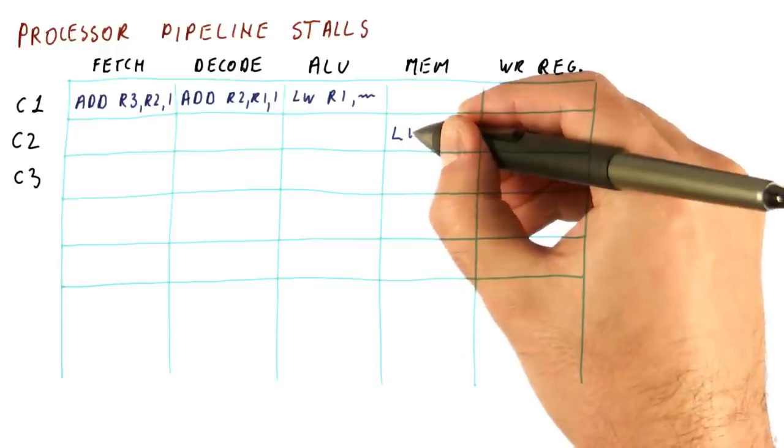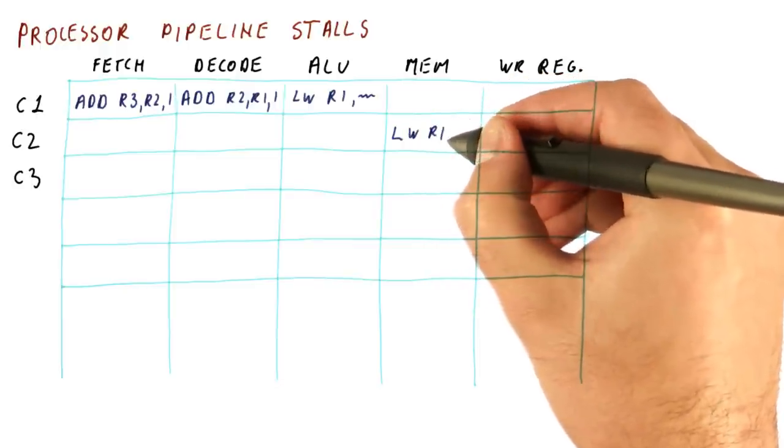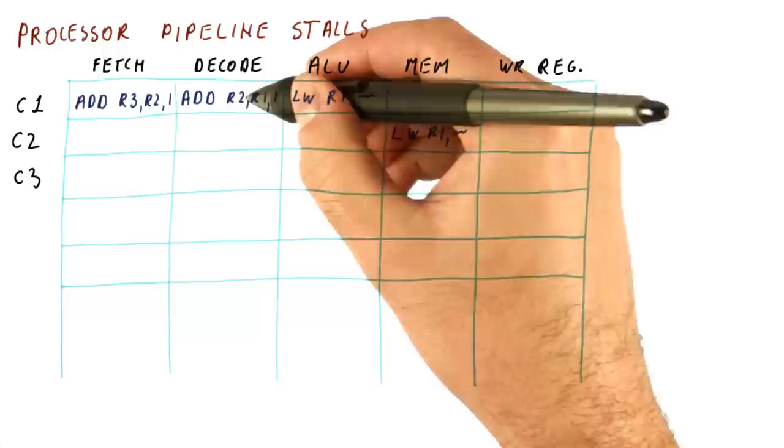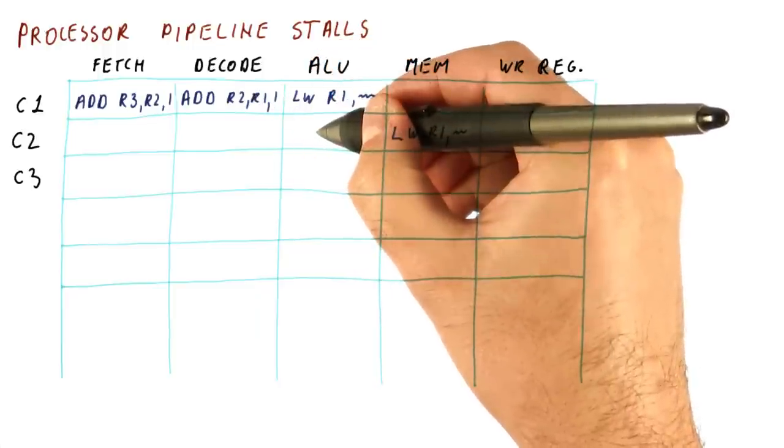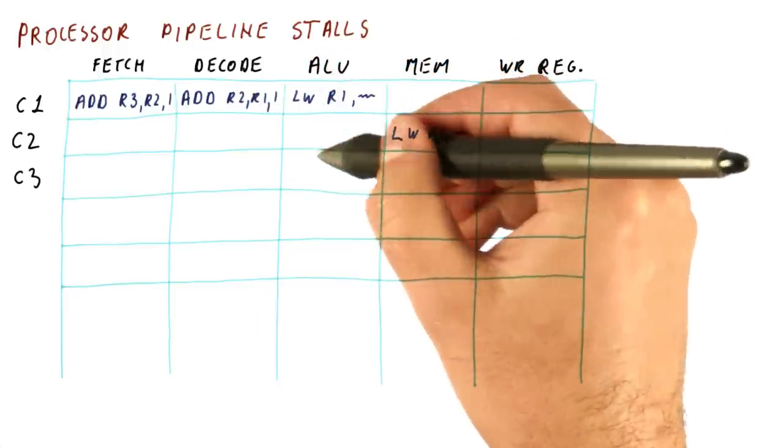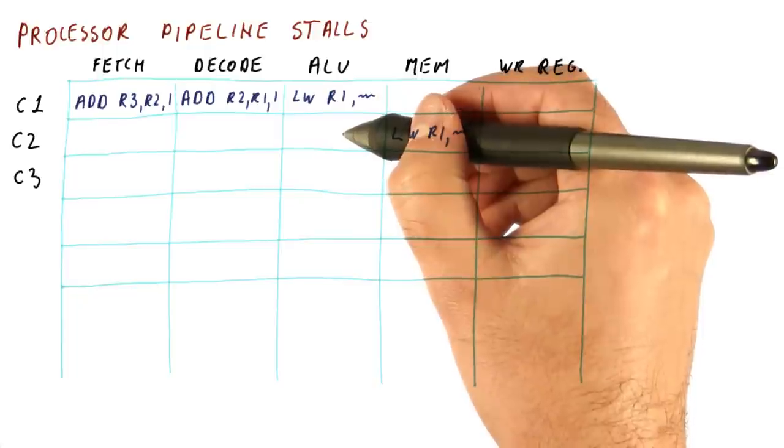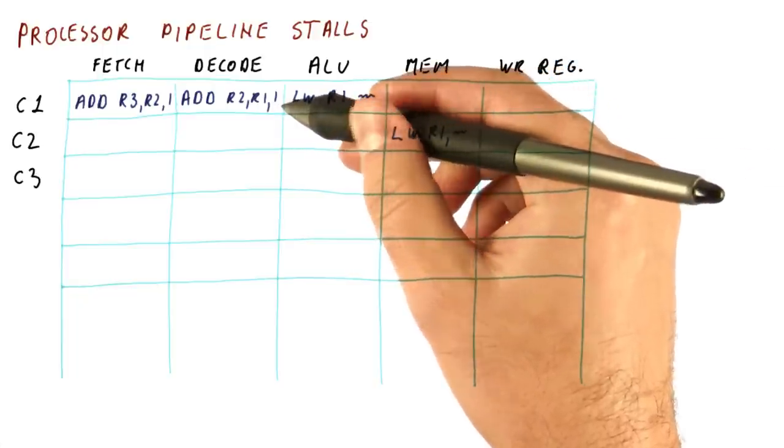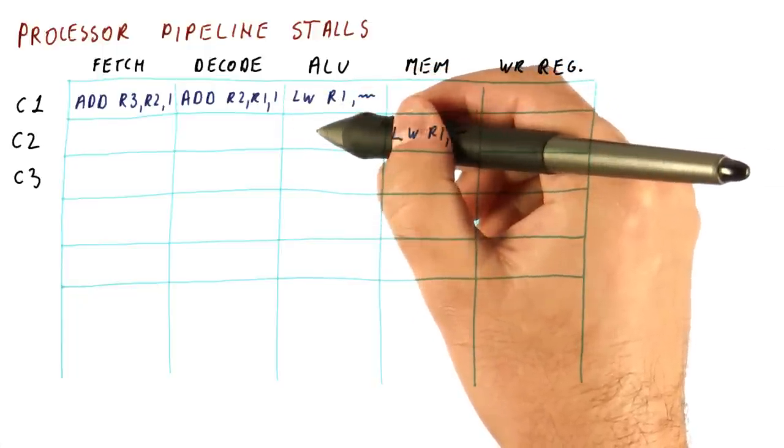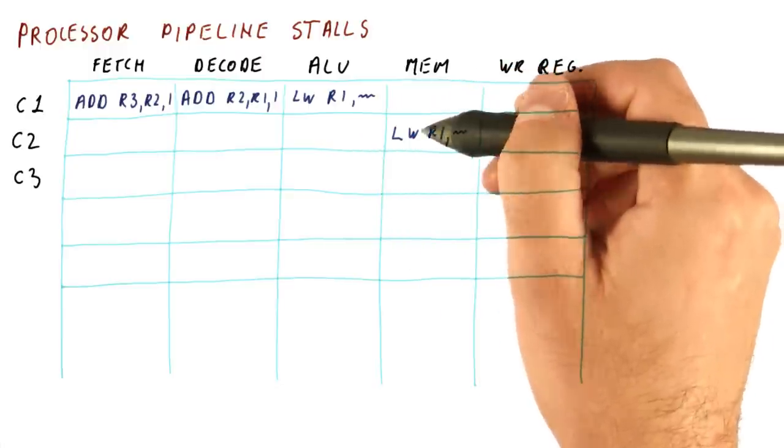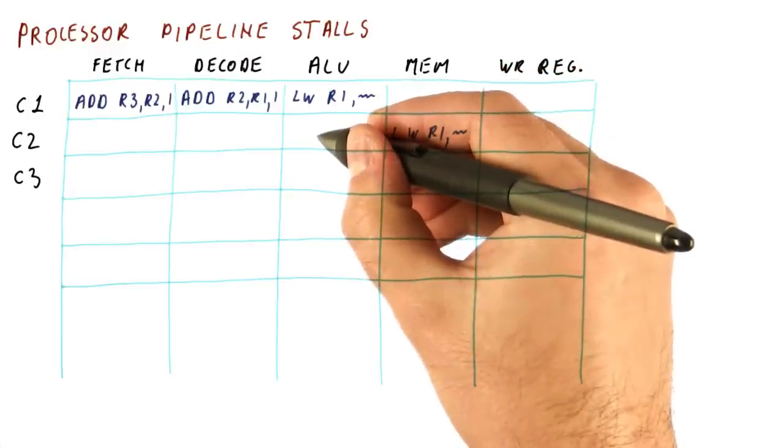So if we let it proceed further, because in the next cycle this load will be here, and now it's actually accessing memory. But by then it's too late. This add, if it moves here, will use the value of R1 that is the wrong one. It's the value of the R1 before the load actually produced a value. And this is where we get a processor stall.